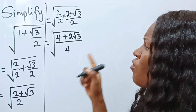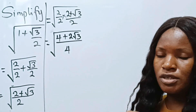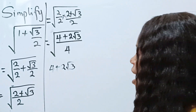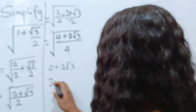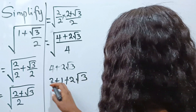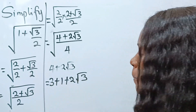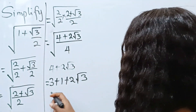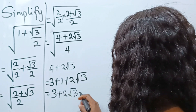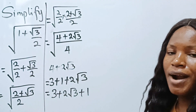Now let's concentrate on simplifying 4 plus 2 root 3. This can be written as 3 plus 1 plus 2 root 3, which rearranges to 3 plus 2 root 3 plus 1.